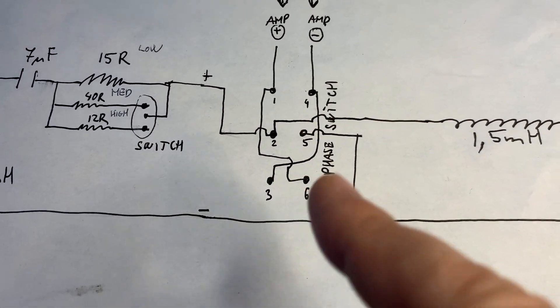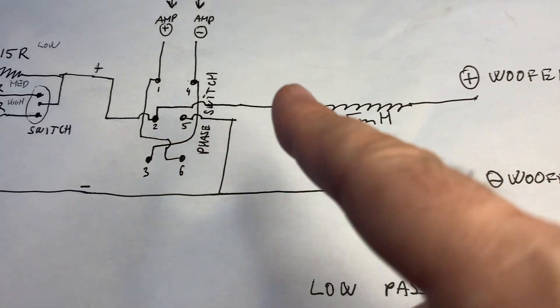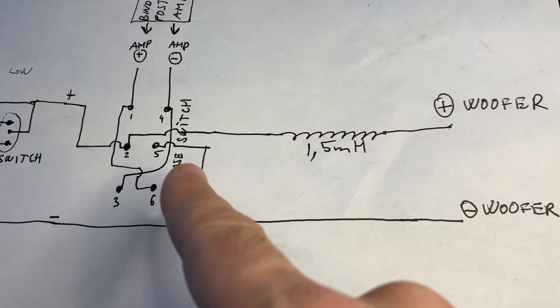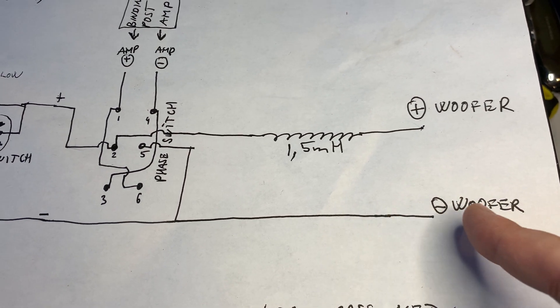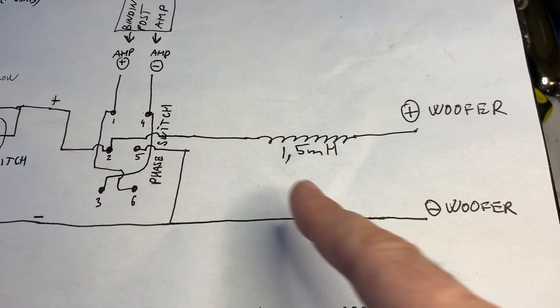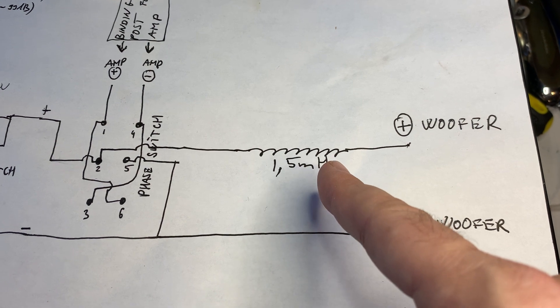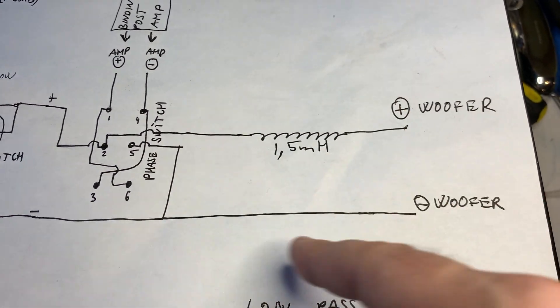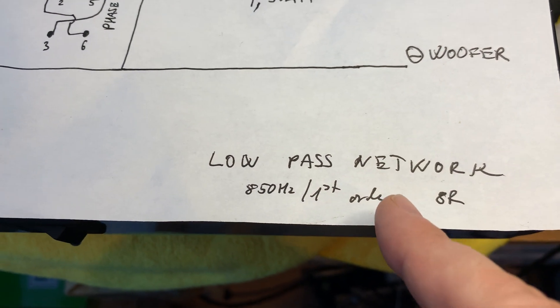Right now let's continue with the crossover. For the woofer, the low-pass network is super easy. You hook up the negative terminal of your woofer directly. There is nothing in there. The positive terminal has the 1.5 mH choke. So it's a first-order network for 850 Hz first-order low-pass.